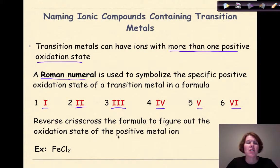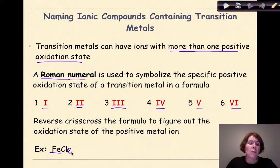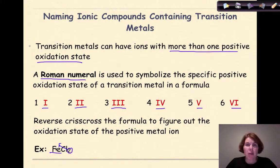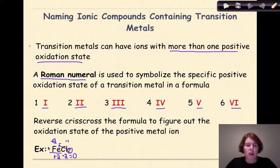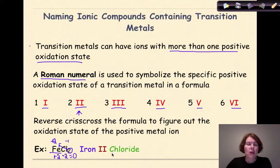Looking at the example FeCl₂: iron is a transition metal and can have multiple charges. To figure out the charge on Fe, I take the subscripted 2 and reverse crisscross it back to iron — iron is a metal so it gets a positive charge, giving us +2. To confirm: chlorine is −1, and −1 × 2 = −2; Fe is +2, so they cancel to zero. The Roman numeral to use with iron is II, so this compound is named iron(II) chloride — the -ine ending of chlorine changes to -ide.